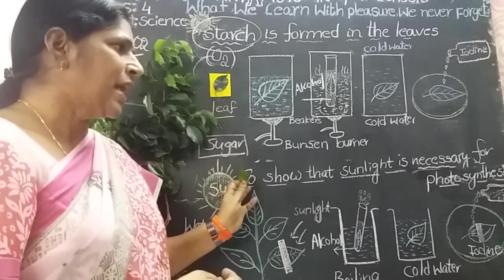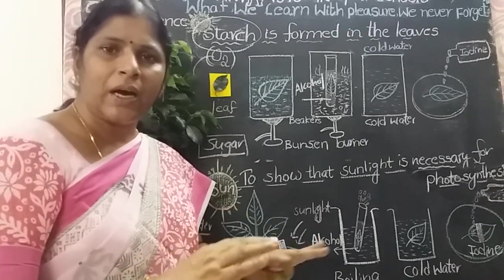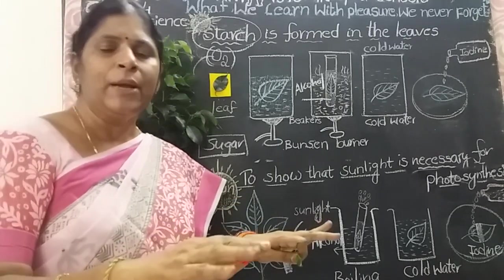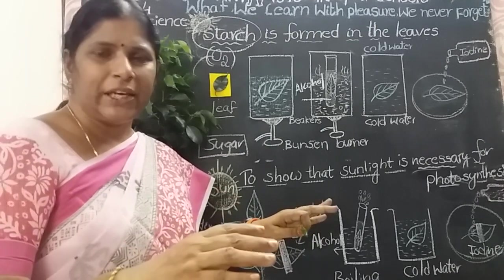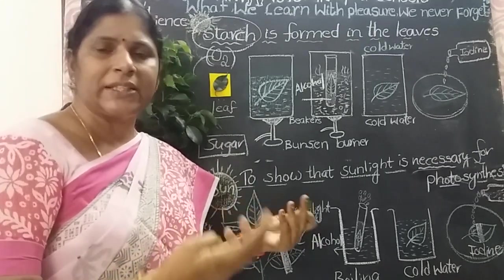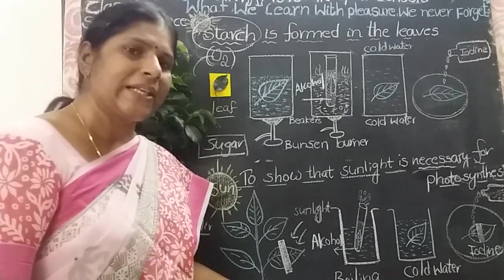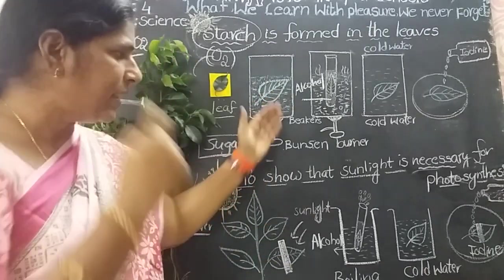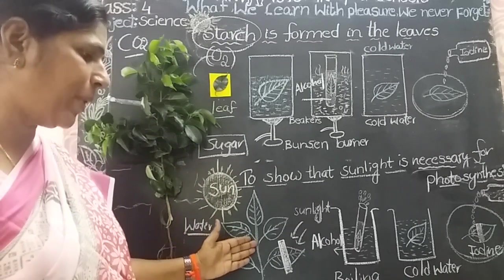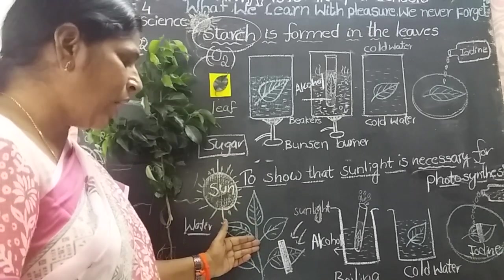Now we will discuss how sunlight is necessary for photosynthesis — an experiment to show that sunlight is necessary for photosynthesis. Without sunlight, plants cannot make their own food. Only in the presence of sunlight can all green plants make their own food. During the night, there is no sunlight, so plants cannot make food. Take one healthy potted plant and keep it in a dark room for 24 hours.